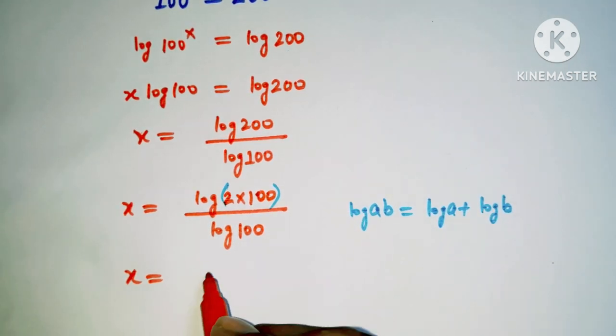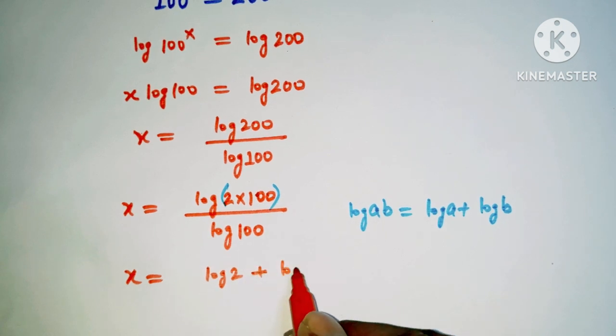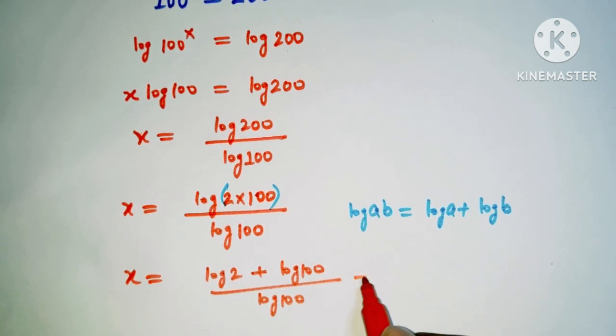So based on this, I can write log 2 plus log 100 divided by log 100.